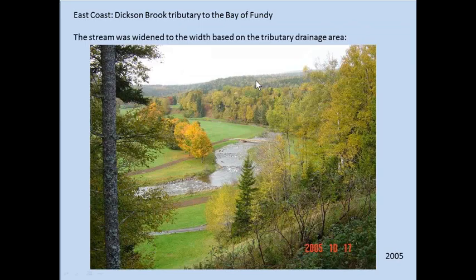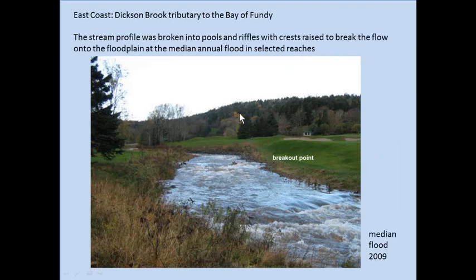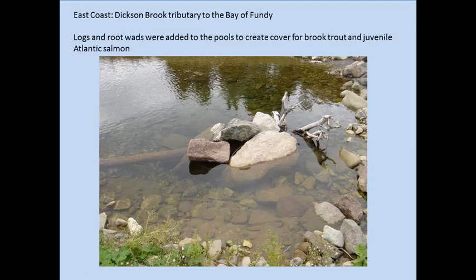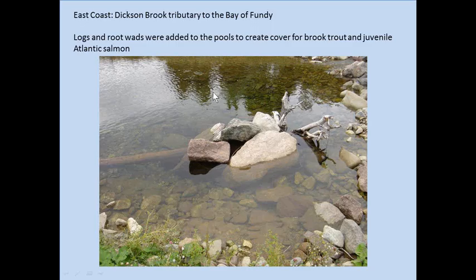What was found was the stream was about half the width it would have been if natural — it was narrowed in the golf course. It had dug itself down about half a meter to a meter below the floodplain, and it was about 50% steeper than it should have been because of straightening and removal of meanders. The stream was then widened to the natural width predicted from the upstream cross sections, and rebuilt through the golf course in a series of pools and riffles to absorb the extra drop. The stream profile was broken into reaches, some of which could break out onto the floodplain during high floods at points selected to do the least amount of damage. Root wads and boulders were placed in pools behind the riffles to provide cover for brook trout and smaller fish.